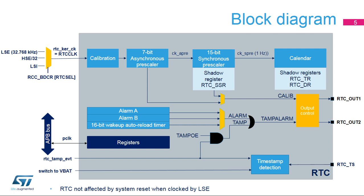The SSR register resolution is increased by reducing the asynchronous prescaler value. The asynchronous prescaler can also be bypassed. In this case, the sub-second register resolution is defined by the RTC clock frequency. The RTC has two outputs that can provide the alarm flags, the wake-up timer flag, a calibration output from the prescalers, and also a tamper detection event. In this figure, the shadow registers belong to the APB clock domain.